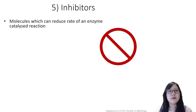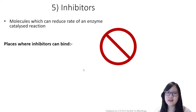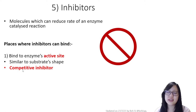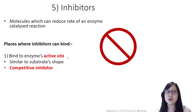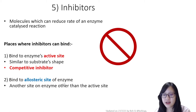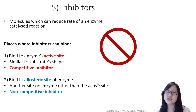So what are inhibitors? Inhibitors are molecules which can reduce the rate of an enzyme-catalyzed reaction. In this syllabus, we learn that there are two places where inhibitors can bind to reduce the rate of reaction. Number one, bind to the active site — this means the inhibitor would be similar in shape to the substrate, and in this case we call it a competitive inhibitor. The second place is an allosteric site, which is basically another site on the enzyme other than the active site, and in this case the inhibitor is called a non-competitive inhibitor.